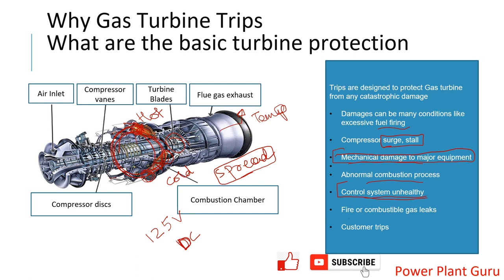Next is fire or combustible gas. A gas turbine is divided into different compartments — there is a turbine compartment, accessory compartment, load gear compartment, and others. In any compartment, if there is a fire or a fuel gas leak, it will be detected, the machine will shut down, and the fuel will be cut off.